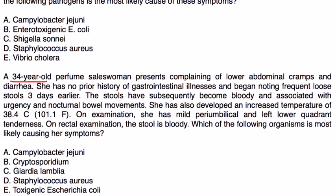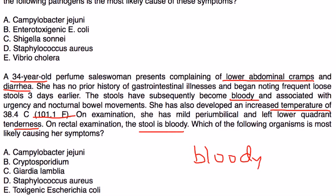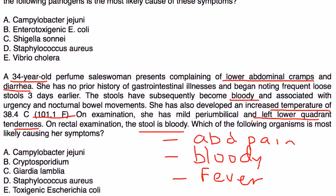Next vignette: A 34-year-old woman presents complaining of lower abdominal cramps and diarrhea. She has no prior history of GI illness and began noting frequent loose stools three days earlier. The stools have become bloody, associated with urgency and nocturnal bowel movements. She has also developed an increased temperature. On exam, she has mild periumbilical and left lower quadrant tenderness. On rectal exam, the stool is bloody. This definitely aligns with C. jejuni — bloody diarrhea, fever, and abdominal pain.